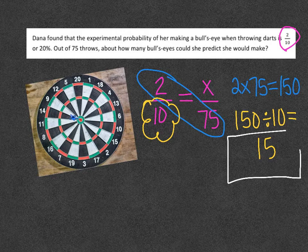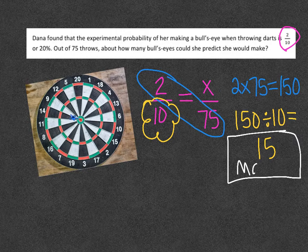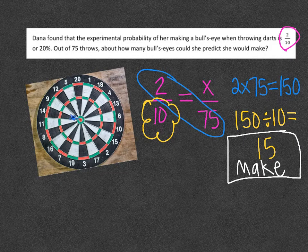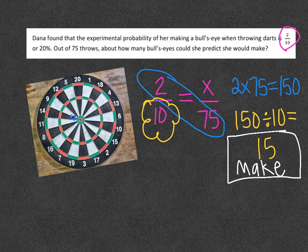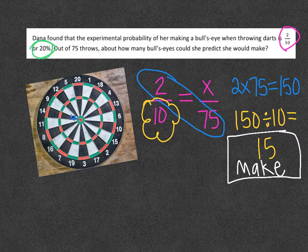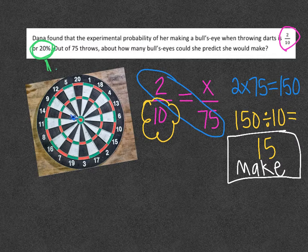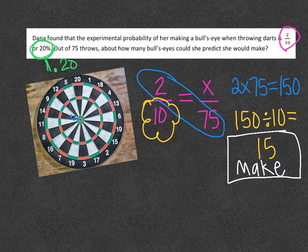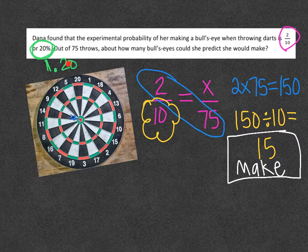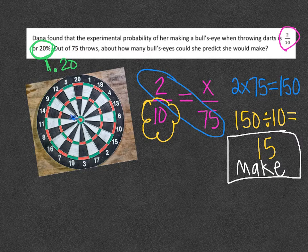She would make 15. So now let's say you wanted to use the percentage to solve the question. This would be another way to do it. I'm going to take the percent, I'm going to make it a decimal, and then I would times it with the total number of throws she's going to make, which is 75. I would times these together. I'm going to get the same answer.